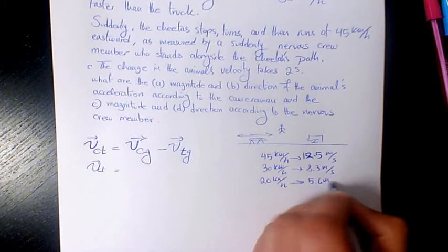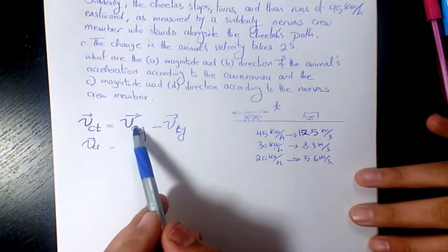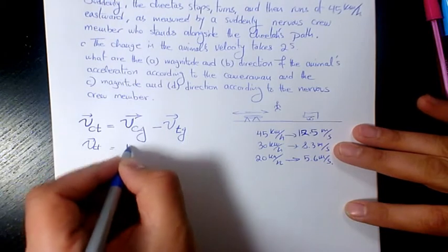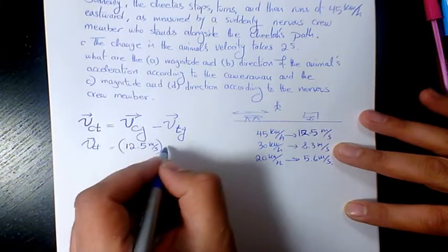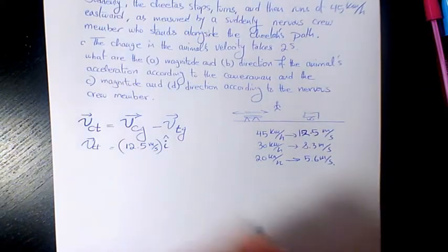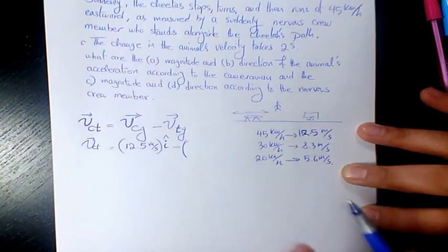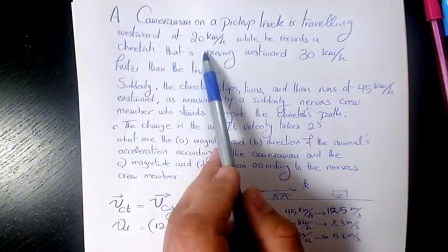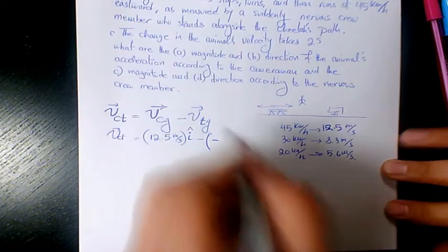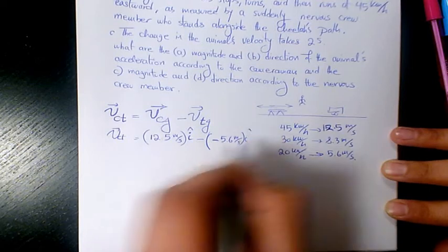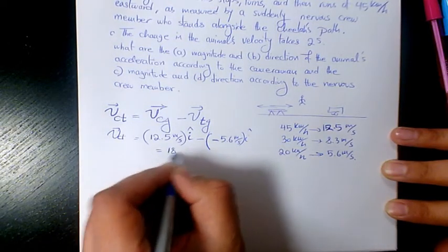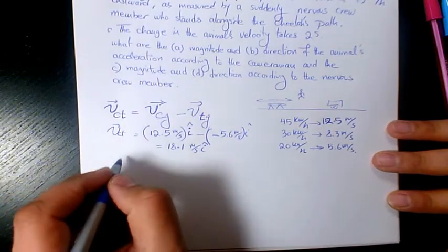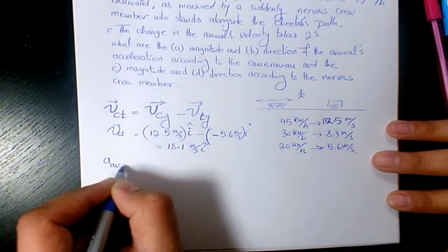The cheetah with respect to ground at the end was 45 km/h, so I'll use 12.5 m/s. Since it's going eastward I make it positive: +12.5 î. Minus the velocity of the truck — it was going west, so negative 5.6 î. That gives 18.1 m/s î. That's the final velocity of the cheetah with respect to the truck.